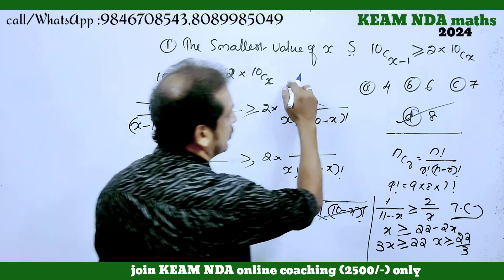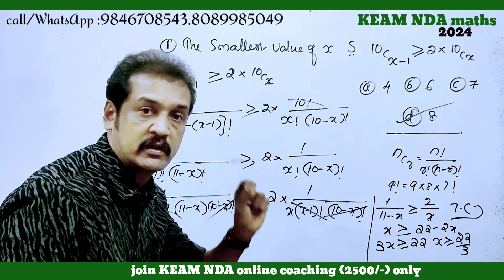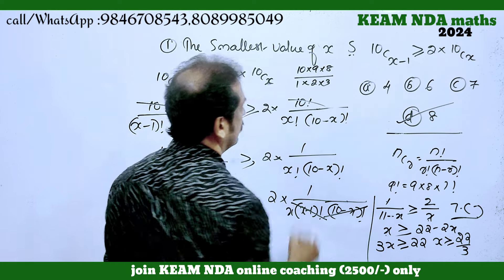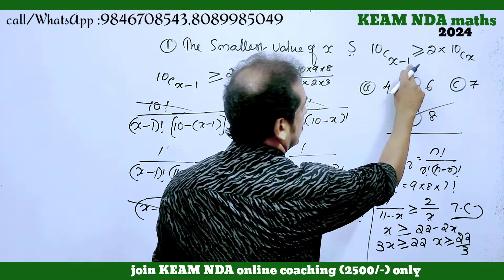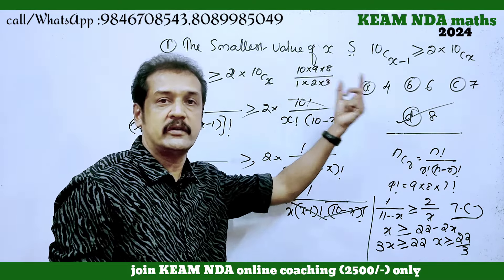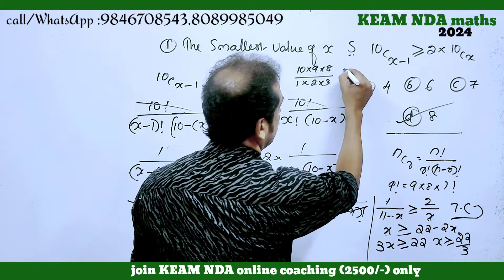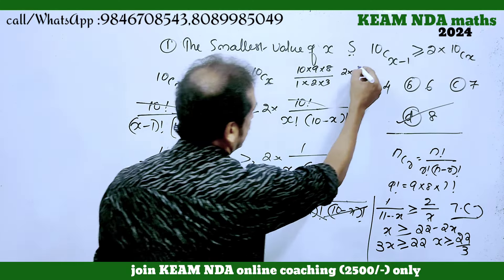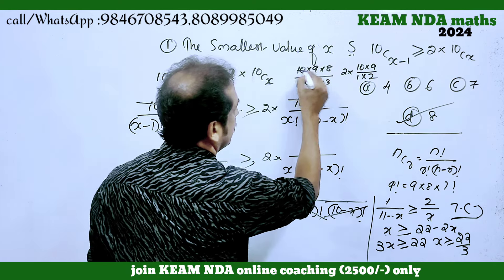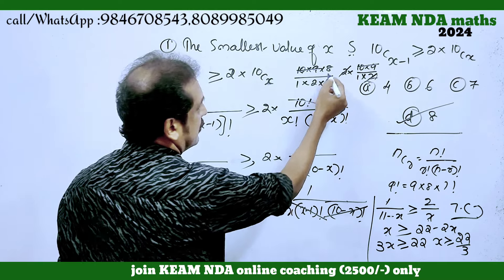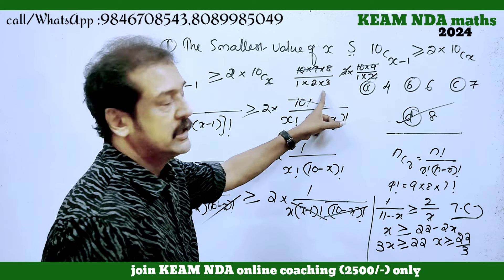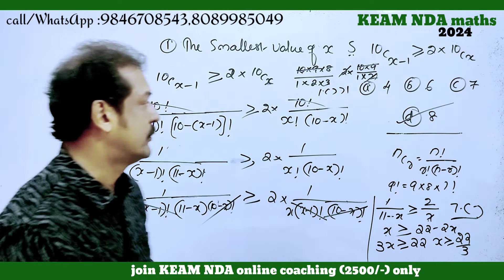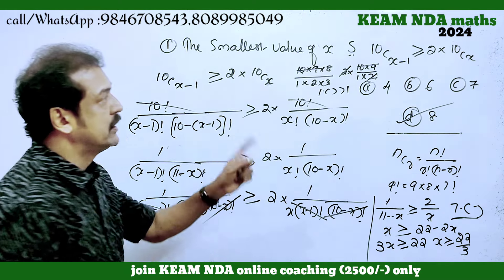The final answer is x equals 8. Let's verify: for x equals 8, the left-hand side is 10C7, which equals 10 into 9 into 8 divided by 1 into 2 into 3, giving 120. The right-hand side is 2 into 10C8, which equals 2 into 45, giving 90. Since 1 point something is greater than 1, this inequality holds. That is correct.